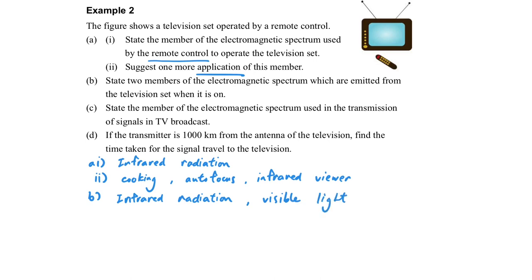Then it is a kind of infrared radiation. And because this is a TV, we must be able to observe visible light. Now what is the electromagnetic spectrum that we use for transmission of signals?